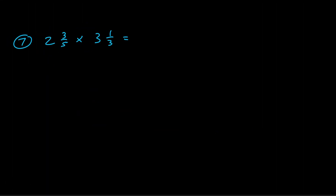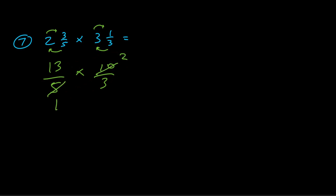For number seven we're multiplying mixed numbers. Convert to improper fractions: five times two is ten plus three is thirteen, so thirteen fifths; three times three is nine plus one is ten, so ten thirds. Looking for cross-reducing: five and ten both have five in common — five goes into five once and into ten twice. Multiplying across: thirteen times two is twenty-six thirds. Three goes into twenty-six eight whole times with two left over, so the answer is eight and two thirds.